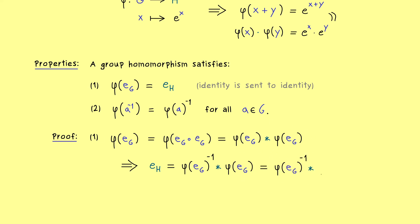And then you might already see, the only thing we need to use now is the associativity. We can simply put the first two elements together, and then we have the identity again. In other words, here we just have the identity in H times φ(e_G).